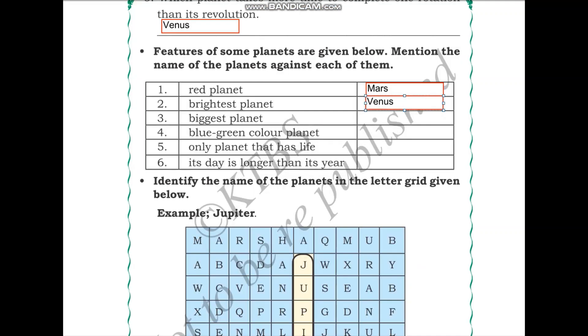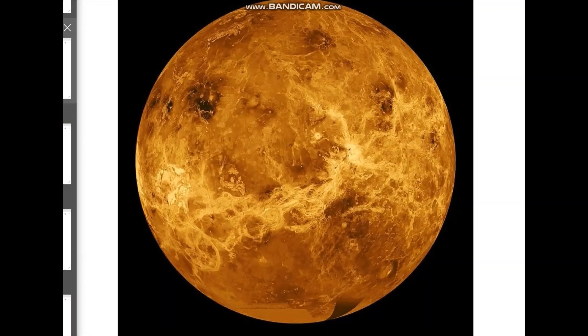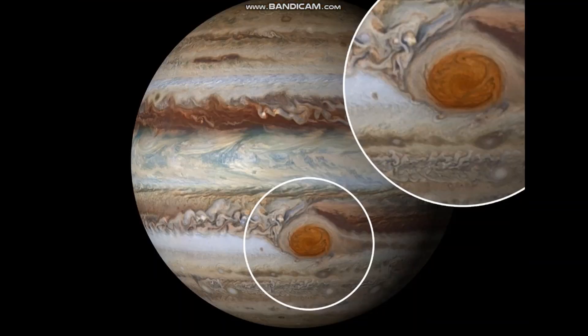Which is the biggest planet? The answer is Jupiter. Jupiter is the biggest planet in the solar system, and it is so big that nearly 1,300 Earths can fit inside it.